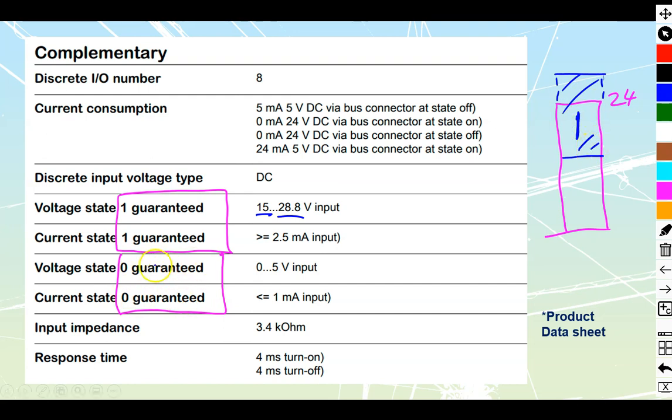Same with our voltage state 0. It's going to have its own range down at the bottom, and it takes anywhere between 0 to 5 volts as being a 0 that we are going to have. So guaranteed off, guaranteed on up top there.